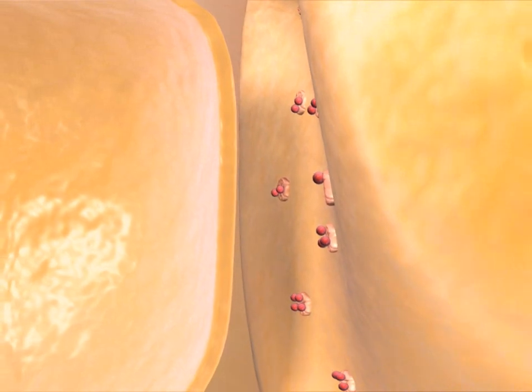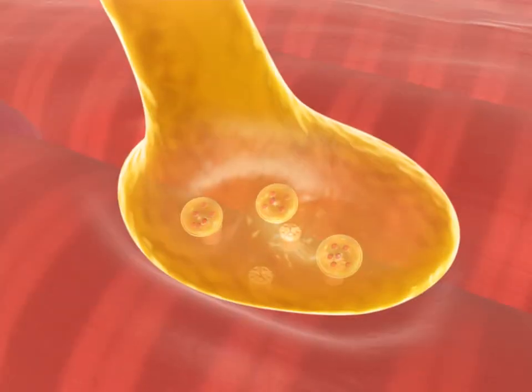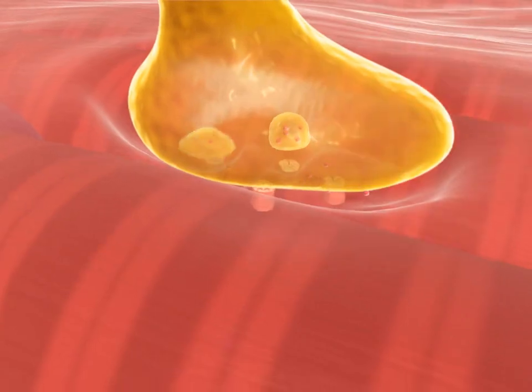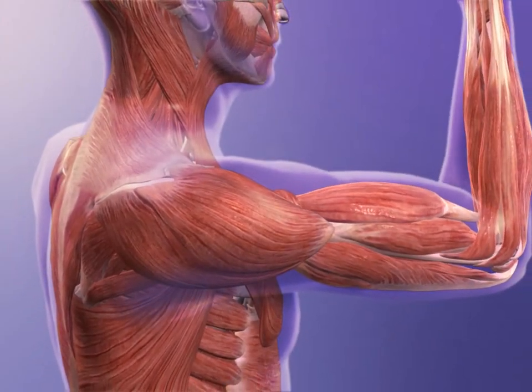These chemicals travel across a small space and activate another neuron, or they can transfer the signal to tissue like muscle and create an action.